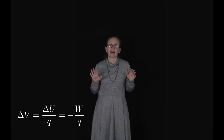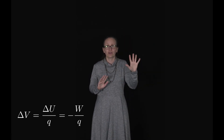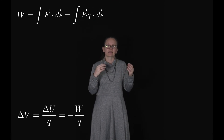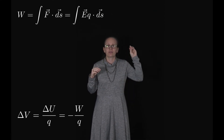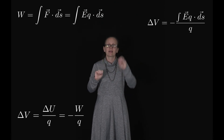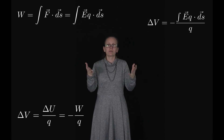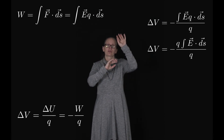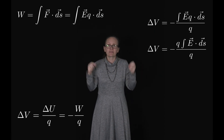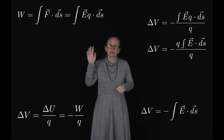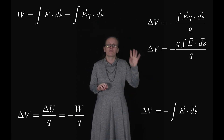Looking again at the equation ΔV = −W / q, we know that the electrostatic work W equals the integral of F·dS, where F is the electrostatic force eQ. So the electrostatic work equals ∫eQ·dS. Substituting into our expression for ΔV gives ΔV = −∫eQ·dS / q. Since Q is a constant, we can pull it out of the integral, and the Q terms cancel, giving the important result: ΔV = −∫E·dS.